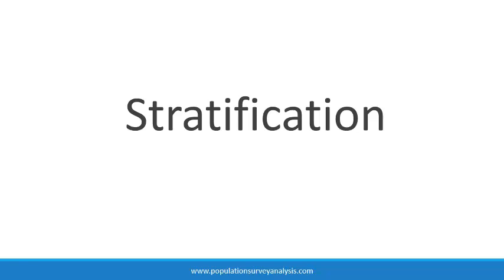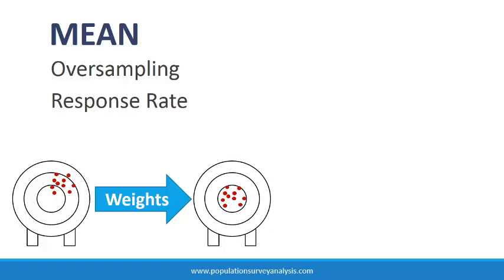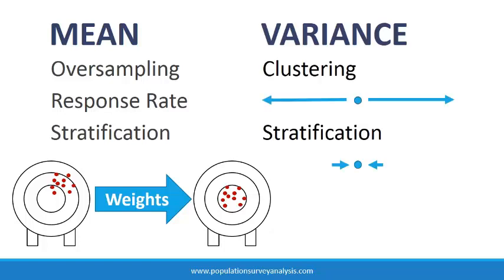The population can be divided into sections called strata that are internally more homogenous or similar. This may be done in order to oversample smaller groups in a target population. Examples of strata are region of country, urban-rural residence, or education level. A separate sample is selected from each stratum. Like oversampling, stratification can bias the mean estimate, and it is therefore incorporated into sampling weights. And like clustering, the observations within strata are not statistically independent, so stratification can affect variance estimates. As a result, stratification is adjusted for in two ways: as part of the sampling weights and as a separate adjustment on the variances.